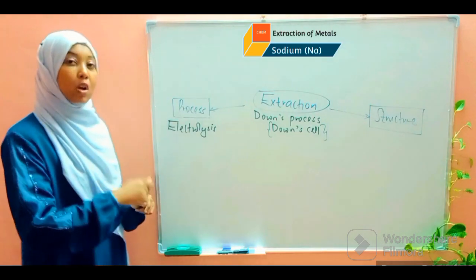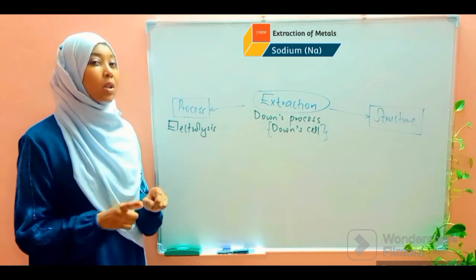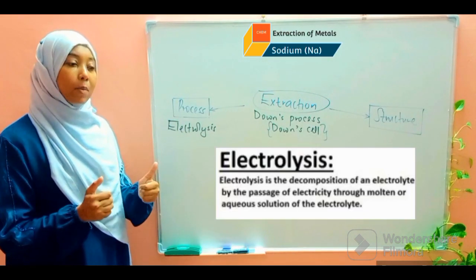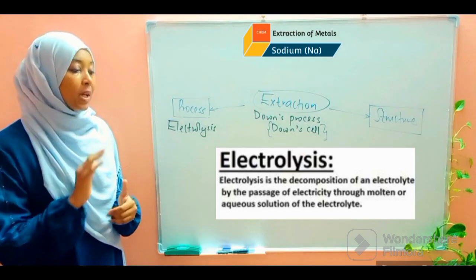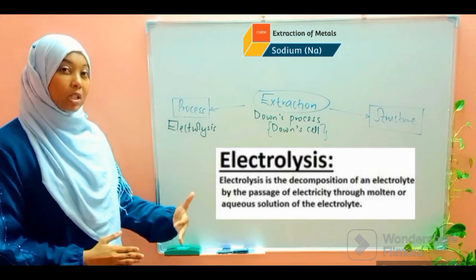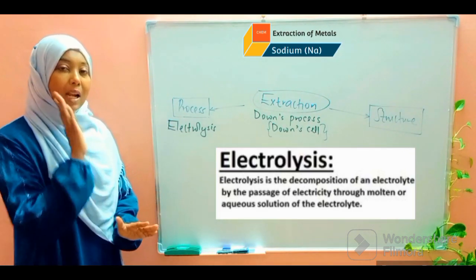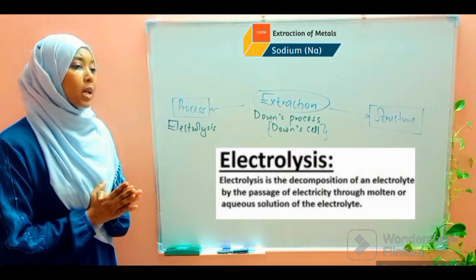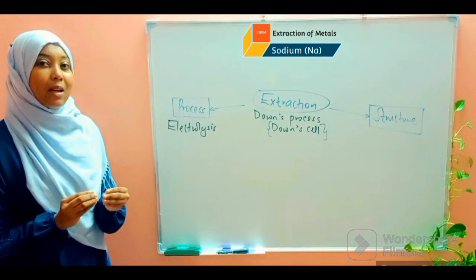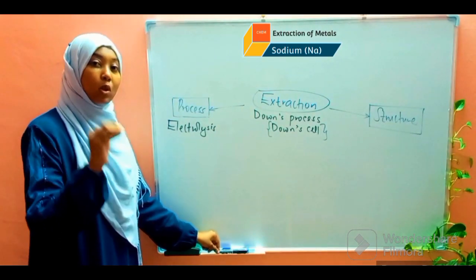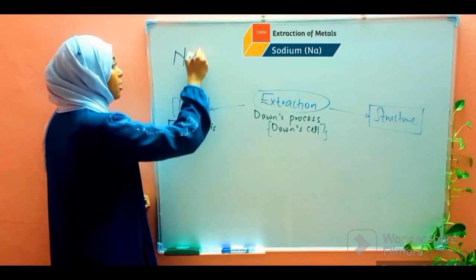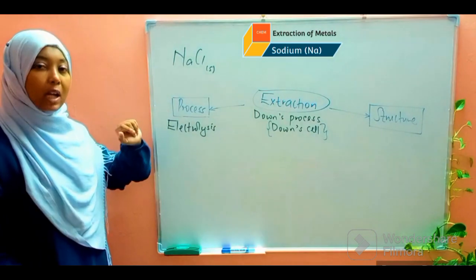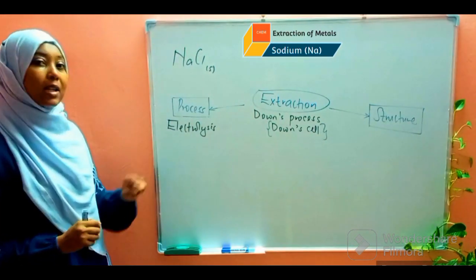The method used to extract sodium from rock salt is electrolysis. Electrolysis is a process whereby electrical energy is used to bring about chemical changes, causing chemical decomposition — electricity brings about chemical reactions which cause the substances involved to break down. We start with rock salt, which is sodium chloride in solid state, and by the end of the process we want to have sodium metal and chlorine gas as the products. So electrolysis is utilized.